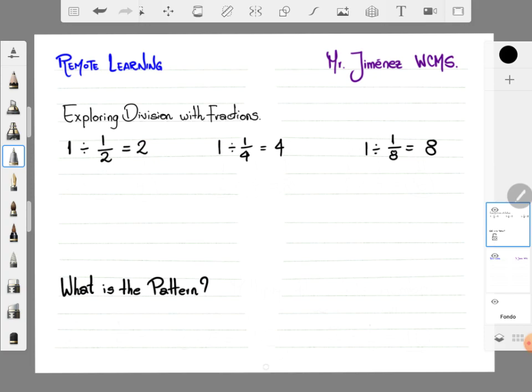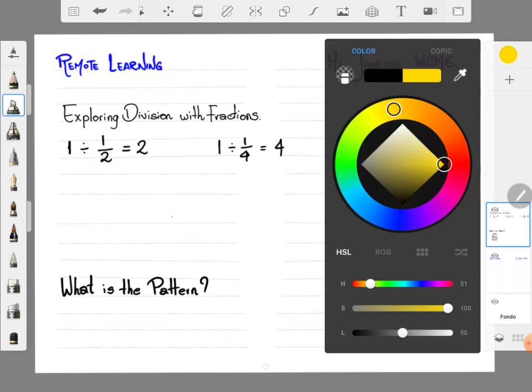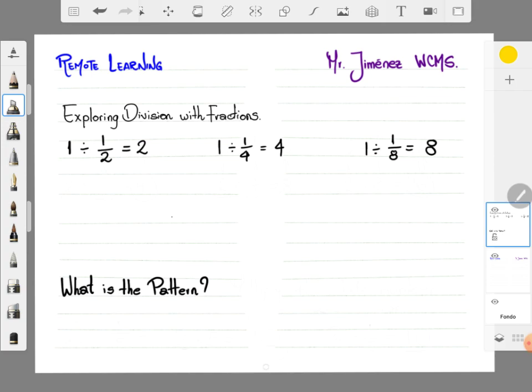This is really easy because we need to identify what operation we can use to solve this situation. Check this out. In this set of exercises, we have the number 1, the whole number is the number 1.